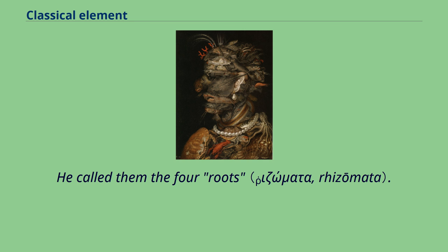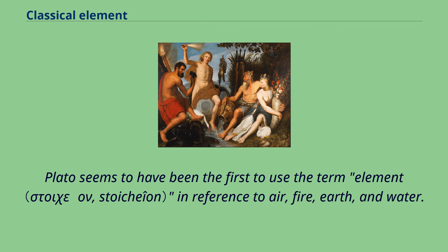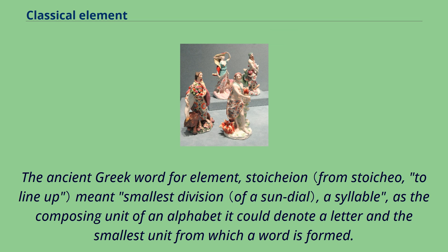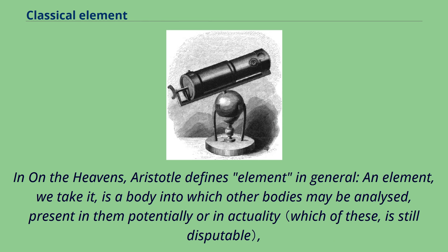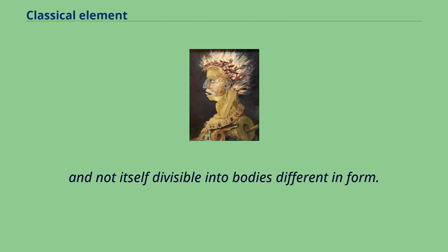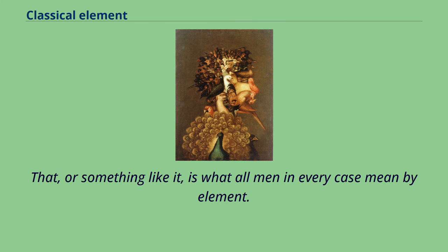Plato seems to have been the first to use the term element in reference to air, fire, earth, and water. The ancient Greek word for element, stoicheion, meant smallest division — a syllable — as the composing unit of an alphabet it could denote a letter in the smallest unit from which a word is formed. In On the Heavens, Aristotle defines element in general: an element, we take it, is a body into which other bodies may be analyzed, present in them potentially or in actuality, and not itself divisible into bodies different in form. That, or something like it, is what all men in every case mean by element.